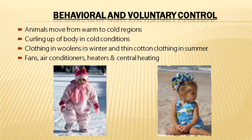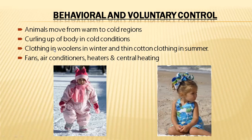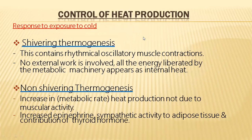In behavioral control, when feeling very warm we prefer shade or staying inside; when feeling cool, we go into sunlight. Curling up the body in cold conditions brings body parts close together, preventing heat loss from the body surface. Wearing light clothes in summer and sweaters in winter, using fans, air conditioners, or heaters — all these are behavioral and voluntary controls. Depending on our preference, we perform these activities to bring our temperature to normal level.